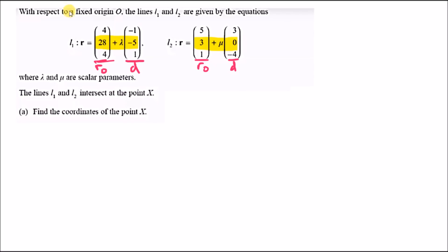The problem states that with respect to a fixed origin O, the lines L1 and L2 are given by position vector equations. The first column is the initial position vector, and the second represents the direction. We're given some constants, lambda and mu, which represent scalar parameters.